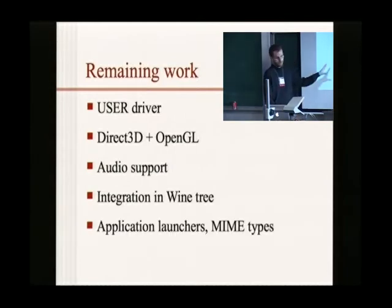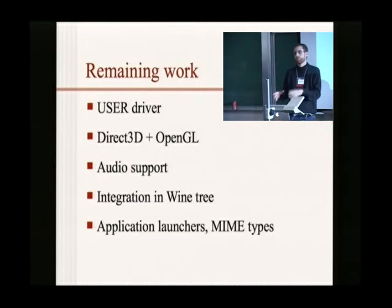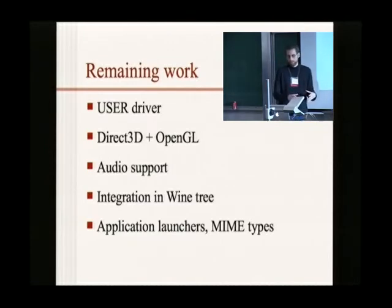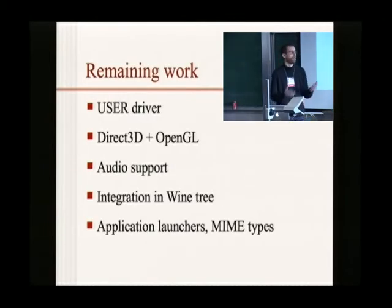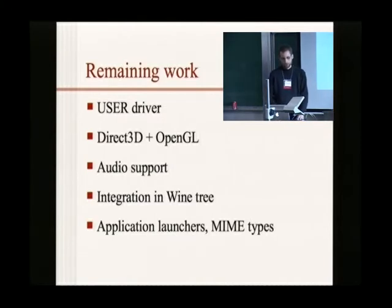We also need more integration — having apps show up in the task manager, having MIME type associations so that if you receive a Word document in your Android email client, you can click and it opens in Word on your device. That's also tricky because many of these things need to be part of the Android package, specified at compile time, signed, and distributed. You cannot after the fact tell Android that a package also handles Word documents.